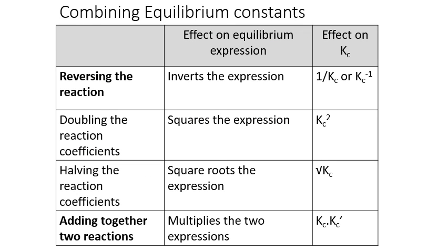In terms of combining equilibrium constants: to get the equilibrium constant for the reverse reaction, take the reciprocal — 1/Kc. If you double the reaction coefficients, square the expression. If you halve the reaction coefficients, take the square root. If you add two reactions together — A → B and B → C — multiply the two equilibrium constant expressions together.